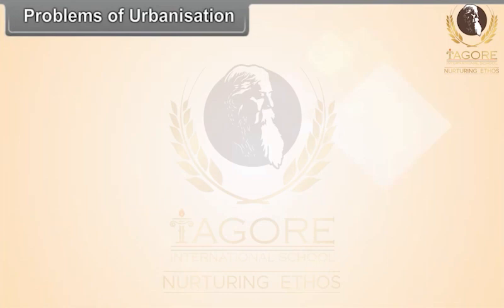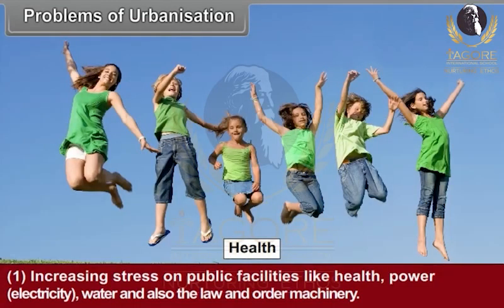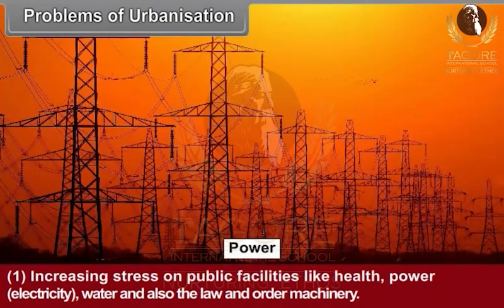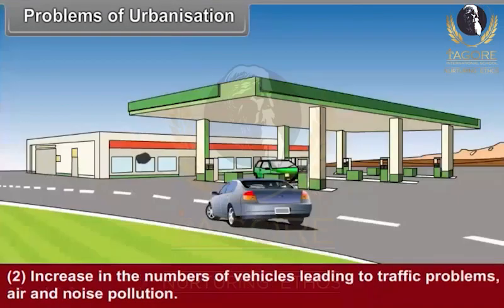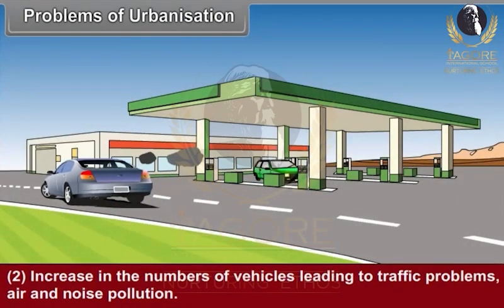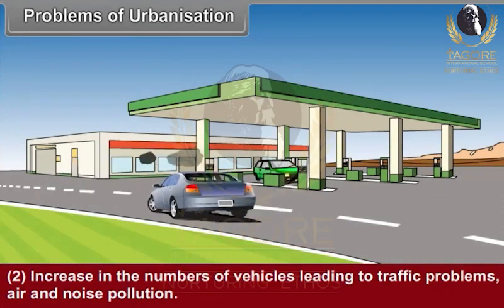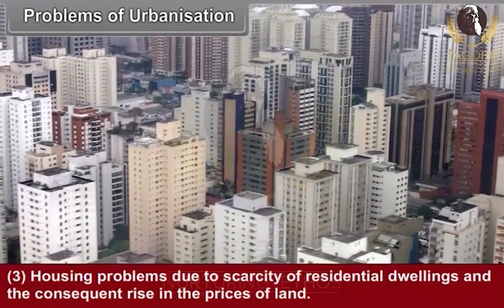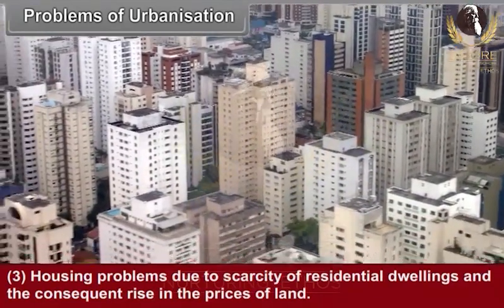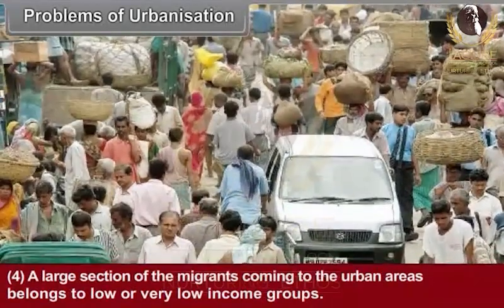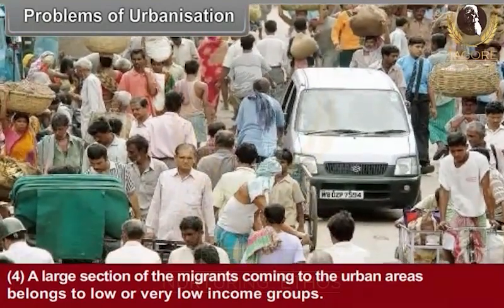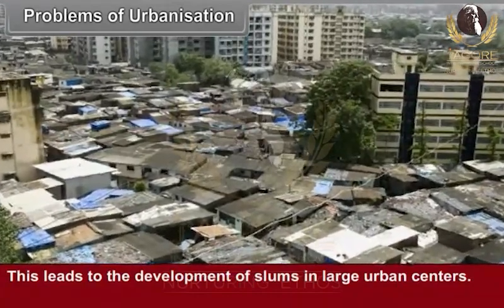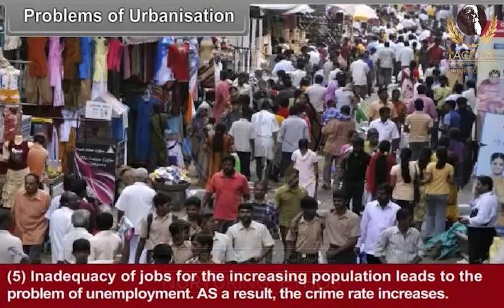Problems of Urbanization: Increasing stress on public facilities like health, power i.e. electricity, water supply and also the law and order machinery. Increase in number of vehicles leading to traffic problems, air and noise pollution. Housing problems due to scarcity of residential dwellings and the consequent rise in the prices of land. A large section of the migrants coming to the urban areas belongs to low or very low income groups, which leads to the development of slums in large urban centers. Inadequacy of jobs for the increasing population leads to the problem of unemployment.